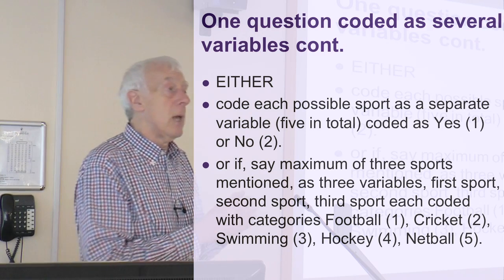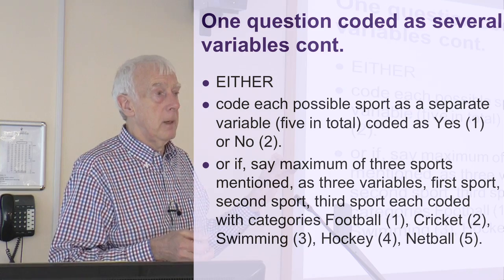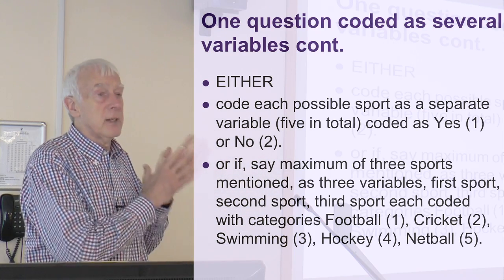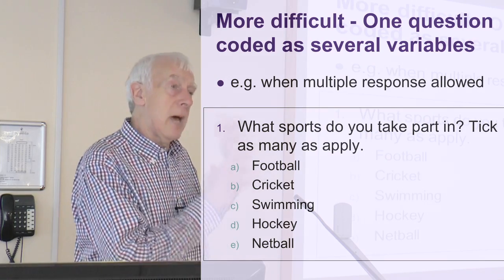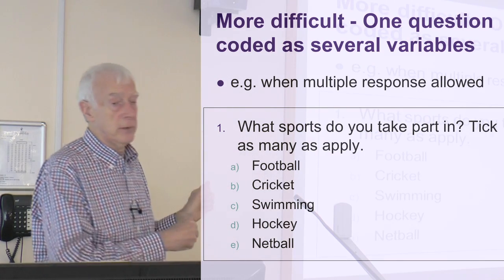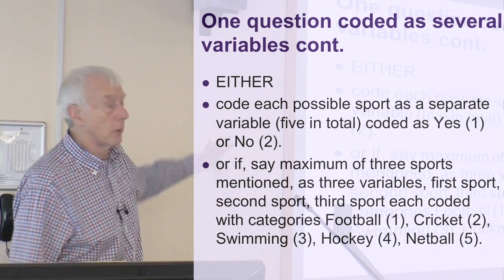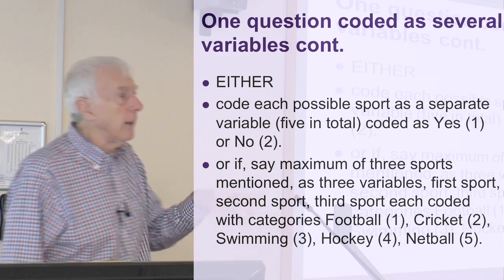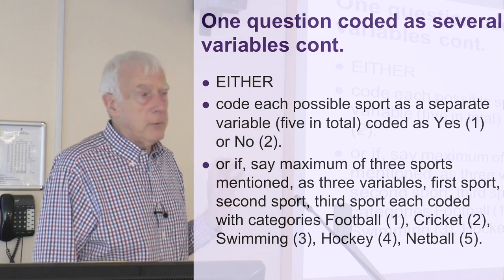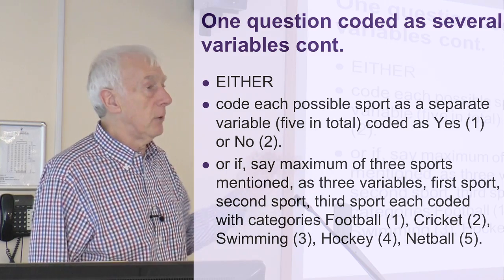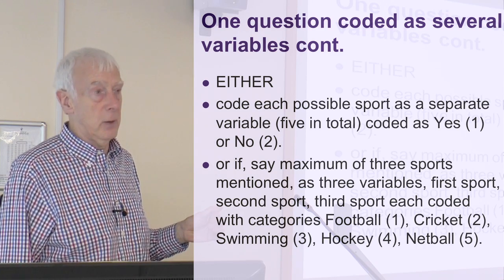Why do that? Well, partly it might be if you've got a large number of options — say you've got 20 options — and people are only ticking two or three, then it probably makes sense to just have three variables that cover all the options they've taken. In my case, in the sports thing, I've only got five options. If I were doing this, I would have five variables — it's not a great deal of extra work, and you don't lose any data. The second option, of having just two or three extra variables, makes sense if you've got lots of options and most of them aren't used. So you have to make a judgment by looking through the data set to see what makes sense.